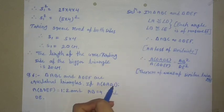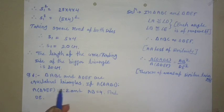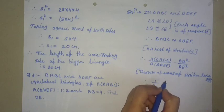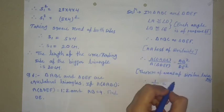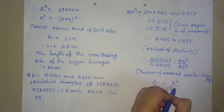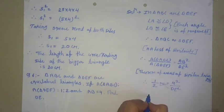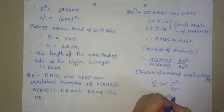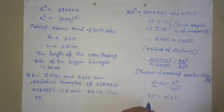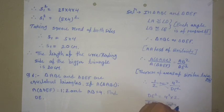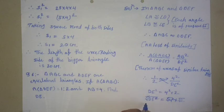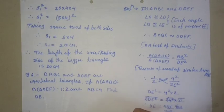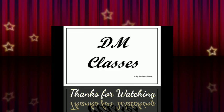By the theorem of areas of similar triangles, area of triangle ABC divided by area of triangle DEF equals AB squared divided by DE squared. We know the area ratio is 1 is to 2, so 1 divided by 2 equals 4 squared divided by DE squared. By cross multiplication, DE squared equals 16 times 2. Taking the square root, DE equals 4 times root 2. Therefore, DE equals 4 root 2 units. Answer.